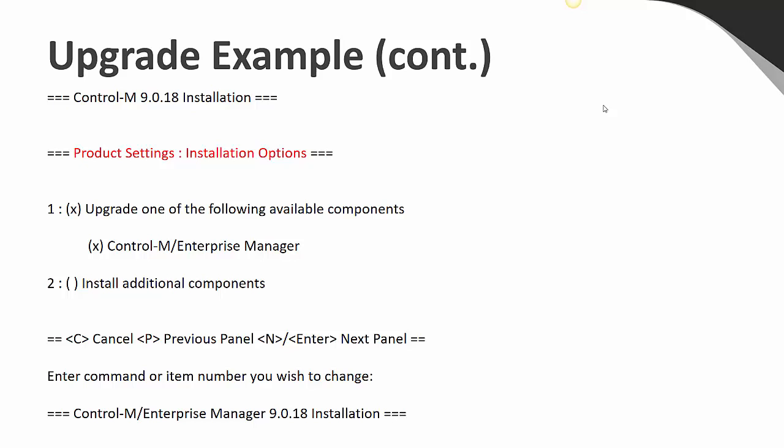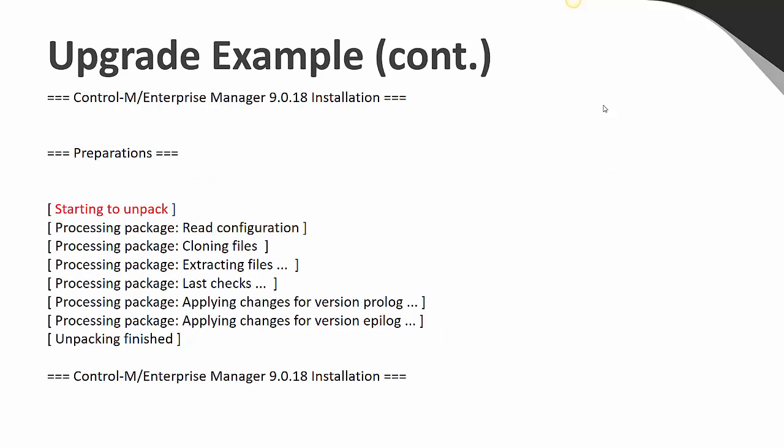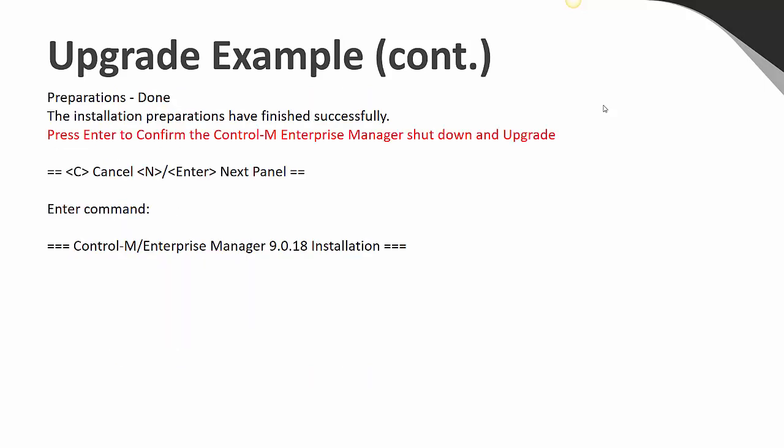It's now going to ask whether I'm doing an installation or an upgrade. In my case, I'm doing an upgrade and choosing Enterprise Manager. Next, it shows information about the environment I am upgrading — the path and the current version. If that looks okay, go ahead and accept. You can also generate an automatic installation file to perform the installation elsewhere. The initial preparation steps are listed, showing things like copying and extracting files. Again, the system is up and running with no effect to current users, jobs, or anything like that. It does get to the point where preparations are done and asks if you're ready to shut down. I'll go ahead and say yes, I'm ready to finalize the upgrade.